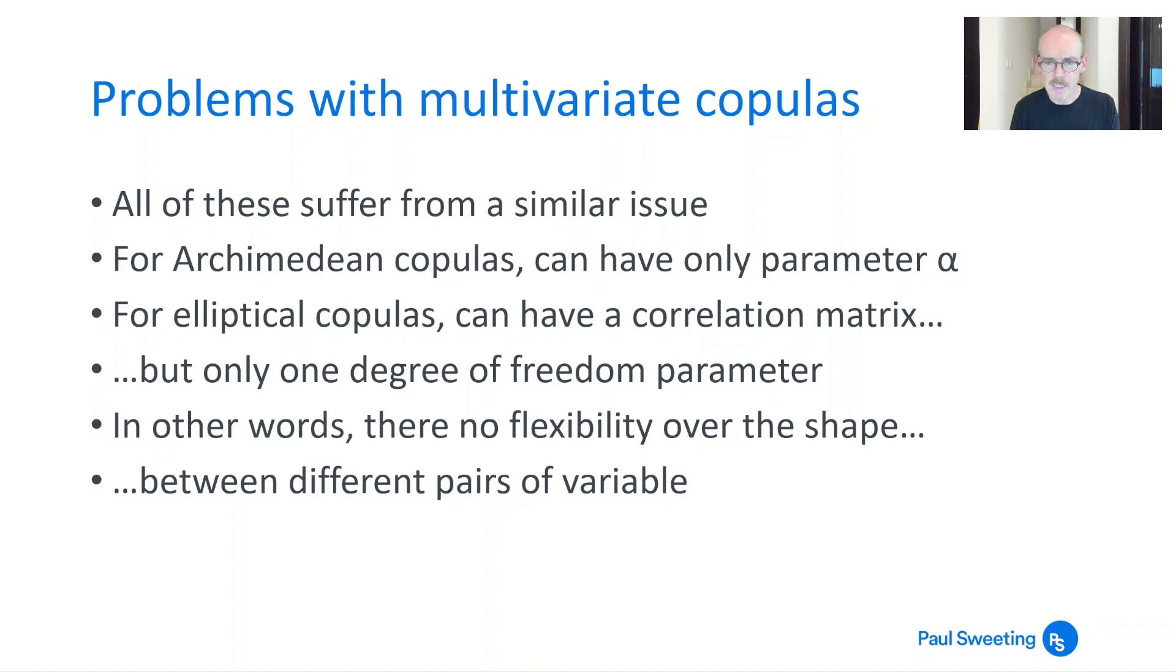For elliptical copulas you can have a correlation matrix but you only have one degree of freedom parameter. So what this means is that you haven't got any flexibility over the shape of the copula if it differs between different pairs of variables. So if the relationship between variables one and two has really fat tails and between two and three doesn't have fat tails, there's no way to really deal with that in a multivariate copula. You've got to take the average of the fatness of the tails and just live with that which is not particularly helpful.